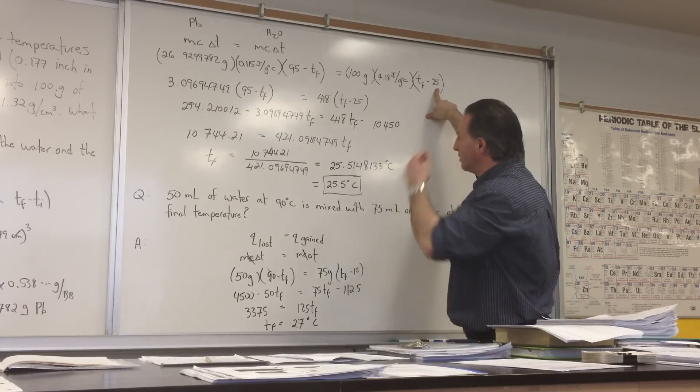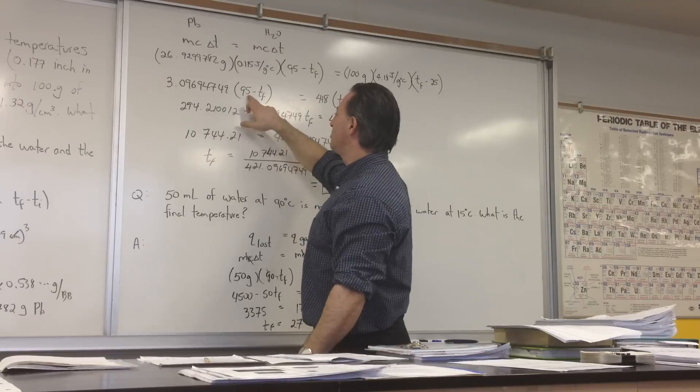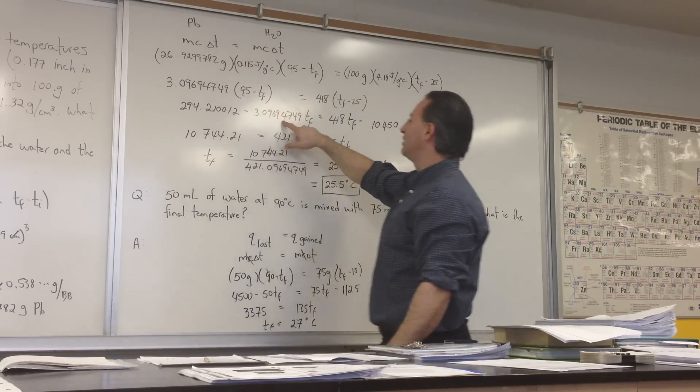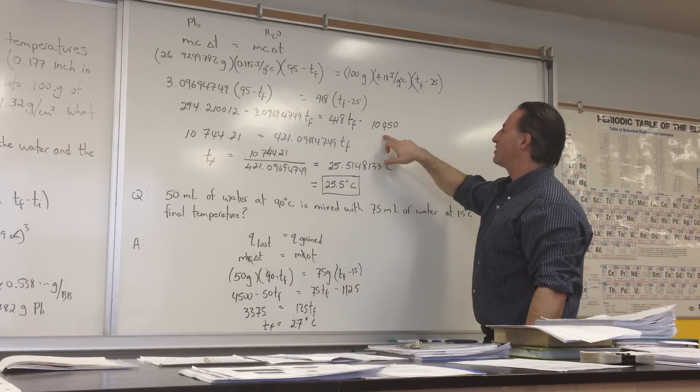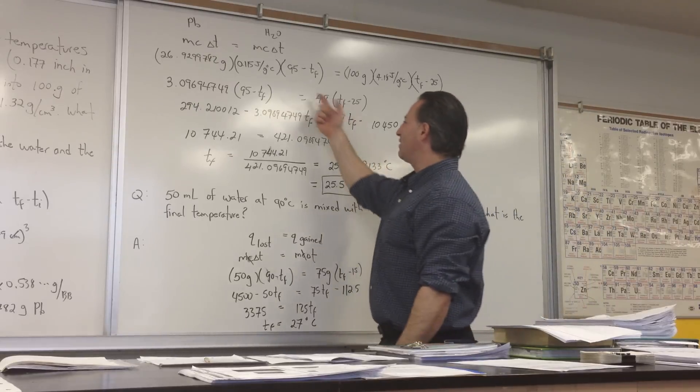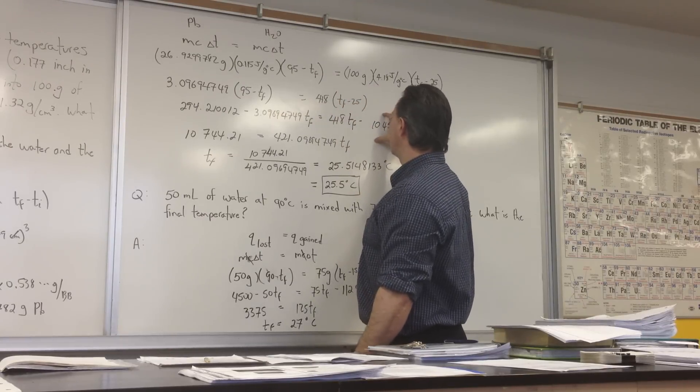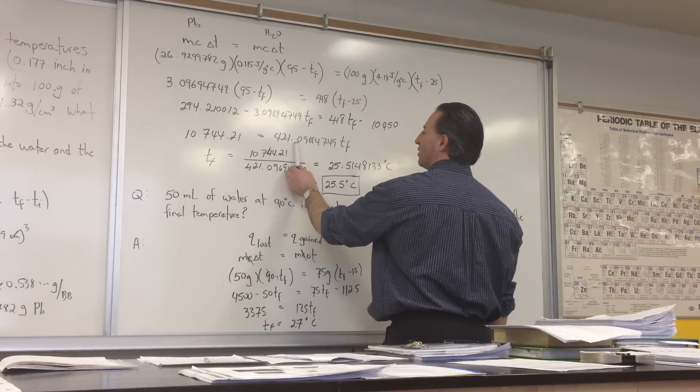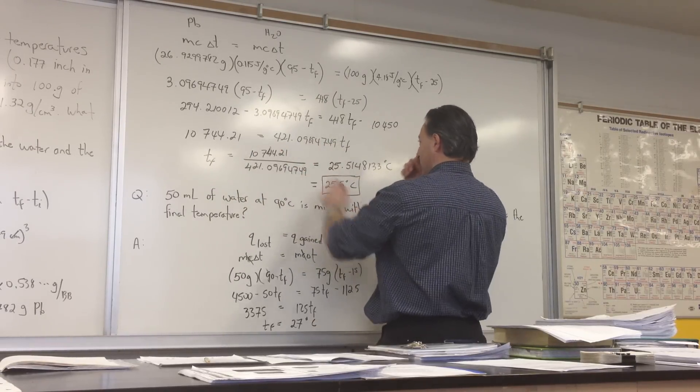Then I multiply these two numbers to get this number. I distribute it into the bracket, so we get 294 and 3.09 TF is equal to 418 TF minus 10,450 by multiplying these two numbers. I then transpose the TF. This TF is transposed to that side, and the negative 10,450 is transposed to that side, so we get 10,744 and 421, because 3 plus 418 is 421, and then I put the rest in the decimal. I didn't even use my calculator for that.